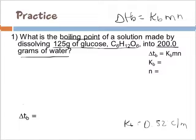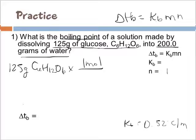We have glucose again, so this is a covalent bond, so n will equal 1. We have 125 grams of glucose. We also have that molar mass from our last problem, so we can pull that right over. So 125 grams. And for every mole of sucrose I have, I have 180.18 grams.